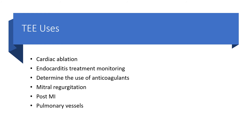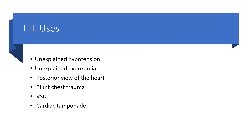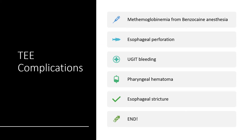Go straight to TEE for unexplained hypotension, unexplained hypoxemia, or when a posterior view of the heart is required. Also call for TEE directly in blunt chest trauma, ventricular septal defect, or cardiac tamponade — it is better to have TEE done in these cases.